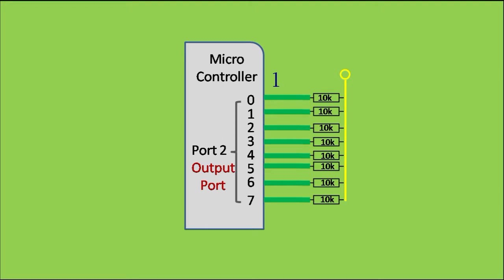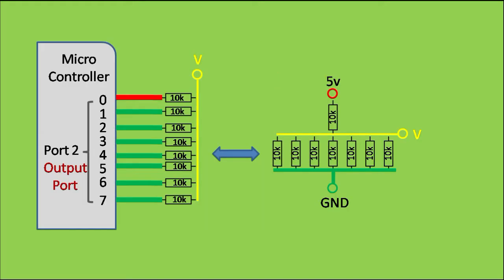Next, writing 1 to the first pin of the port will connect the first resistor to 5V while all other resistors are still connected to ground. The equivalent circuit of this state will be like this.